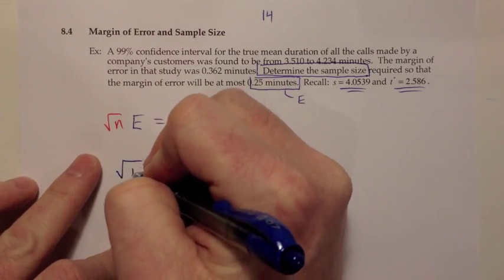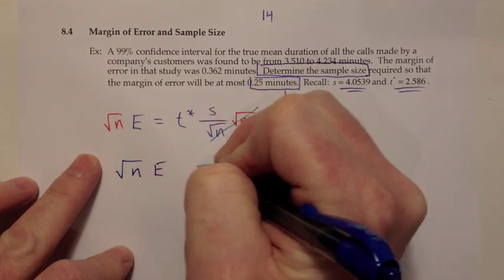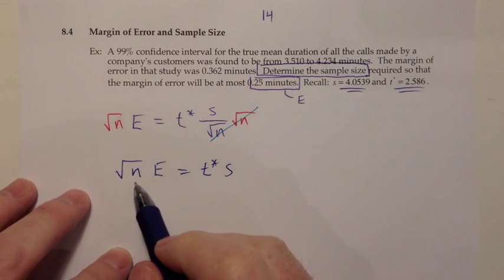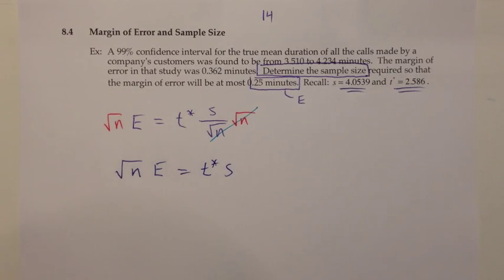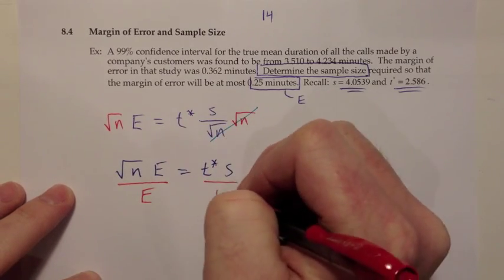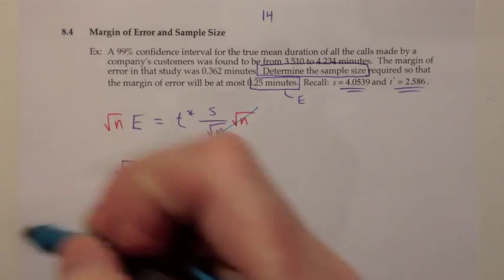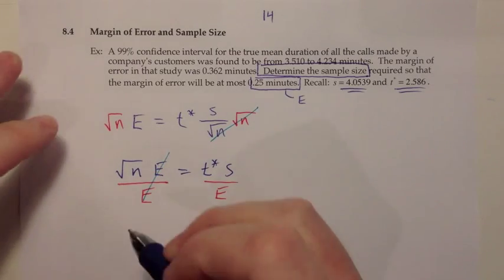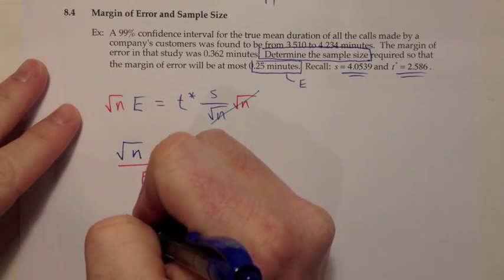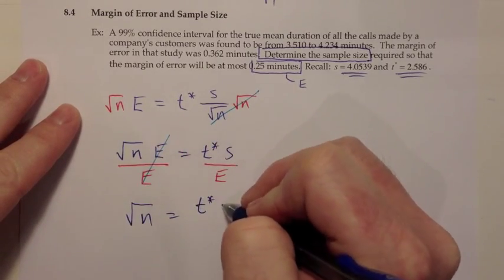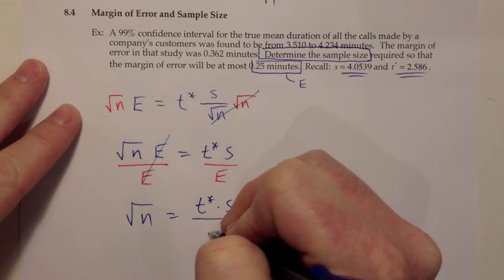I'm trying to get this N by itself. The next algebra step would be to divide both sides by E, and that would cause the E to cancel out. Then I would have root N by itself. At that point, I'm now at root N equals T-star times S over E. I want to get rid of that square root.